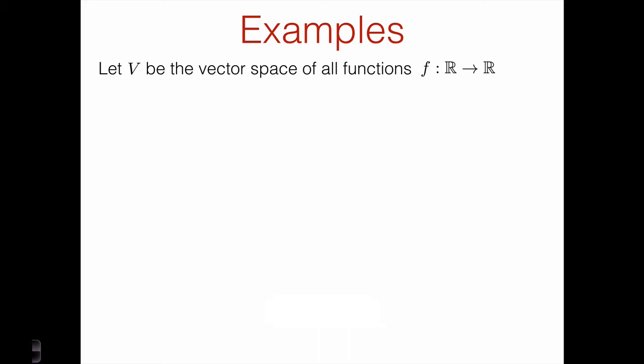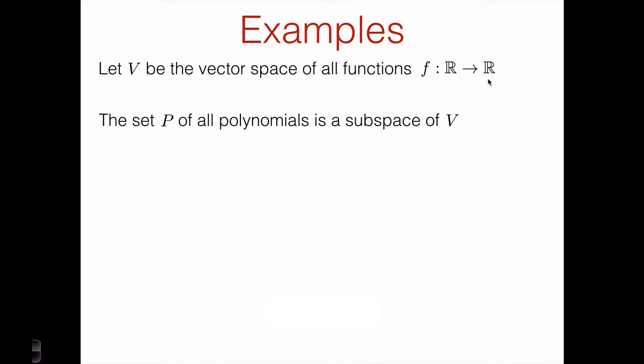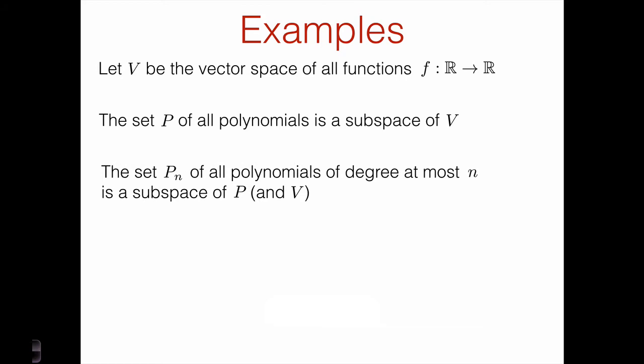We already saw some examples of subspaces when we talked about the vector space of all real-valued functions. The set of all polynomials was a vector space, and since any polynomial is a real-valued function from the real numbers to the real numbers, the set of all polynomials is a subspace of the vector space of all real-valued functions. Then we saw a subspace of the set of all polynomials: the set of all polynomials of degree at most n. Adding two such polynomials or multiplying by a scalar stays within degree at most n, and we include the constant zero function, so this set contains a zero element.